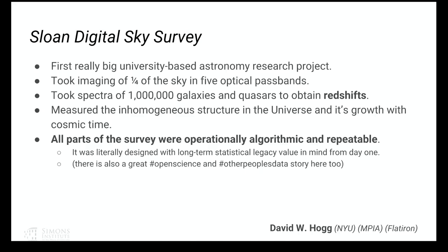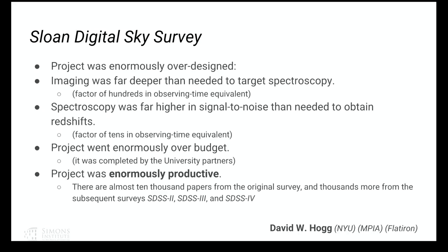All violations of the algorithmic repeatability rule were rule violations. The survey was literally designed with long-term statistical value as a core principle. It was unbelievably over-designed — the imaging was far deeper than it needed to be to target the spectroscopy; we could have saved a factor of hundreds in observing time. The spectroscopy was higher signal-to-noise than it needed to be — we now know we can get redshifts with signal-to-noise of one per pixel. We could have done the whole Sloan Digital Sky Survey in like three months and still achieved the large-scale structure goals.